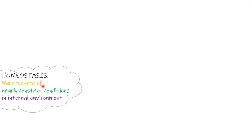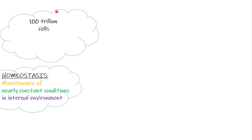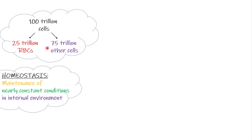So homeostasis is the maintenance of nearly constant conditions in the internal environment. In the body there are 100 trillion cells. Out of these, 25 trillion are RBCs — red blood cells, which carry hemoglobin and oxygen — and 75 trillion are other cells. RBCs are 25 percent of the total cells of the body.